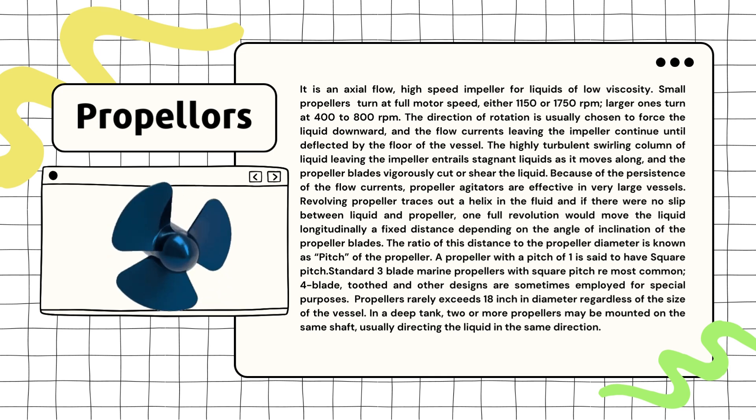When a propeller spins, it traces a helix like a spiral in the liquid. If there was no sliding between the liquid and the propeller, one full spin would move the liquid a fixed distance depending on how the propeller blades are angled. This fixed distance is called the pitch of the propeller. A propeller with a pitch of one is said to have a square pitch.